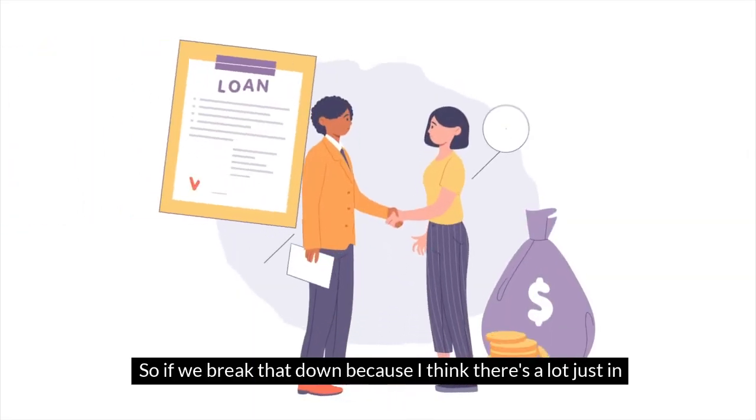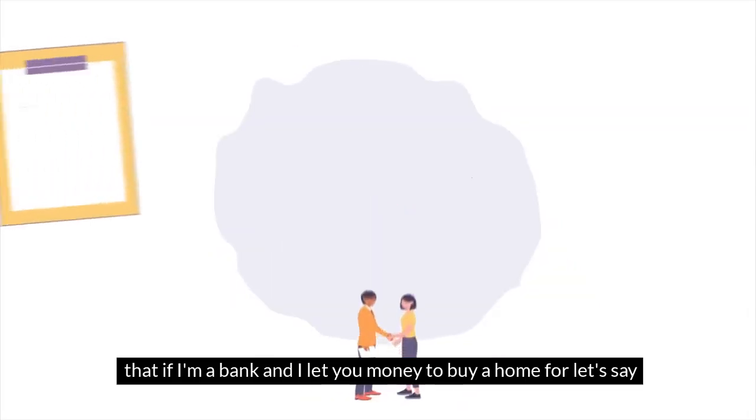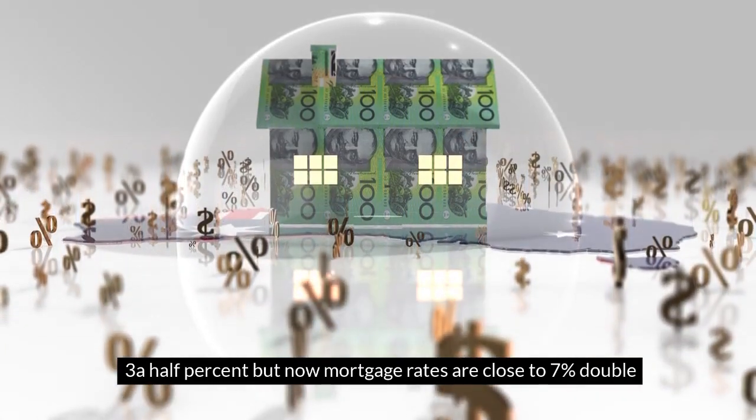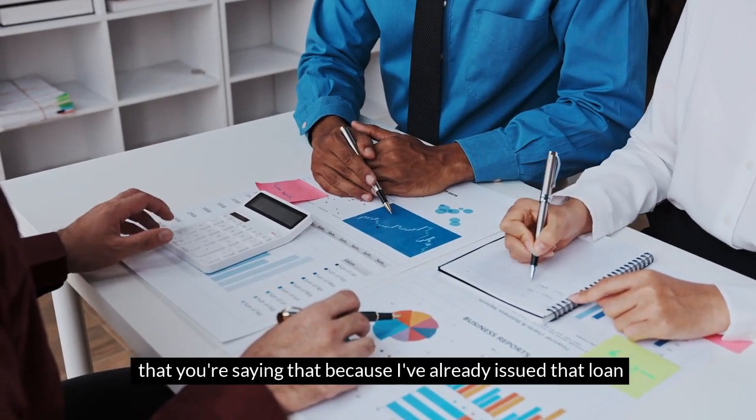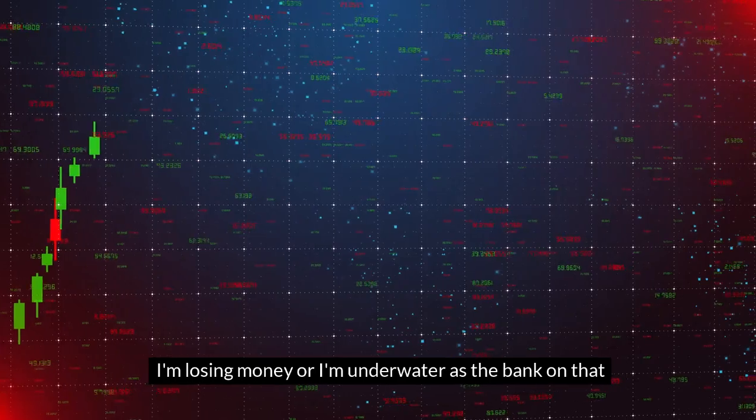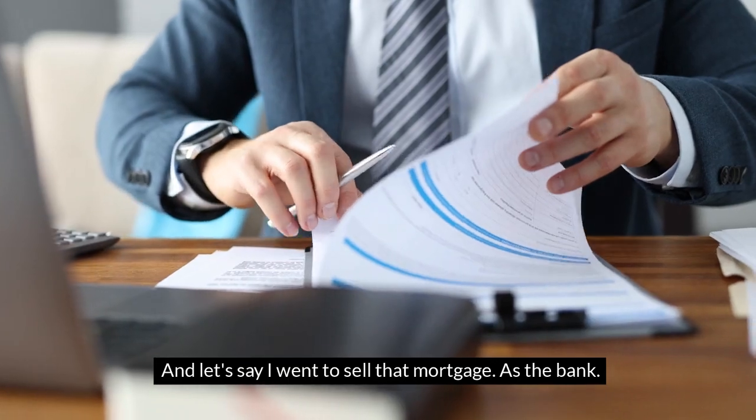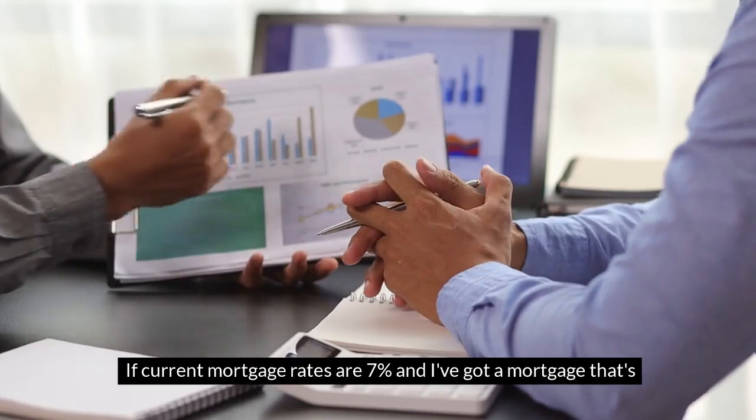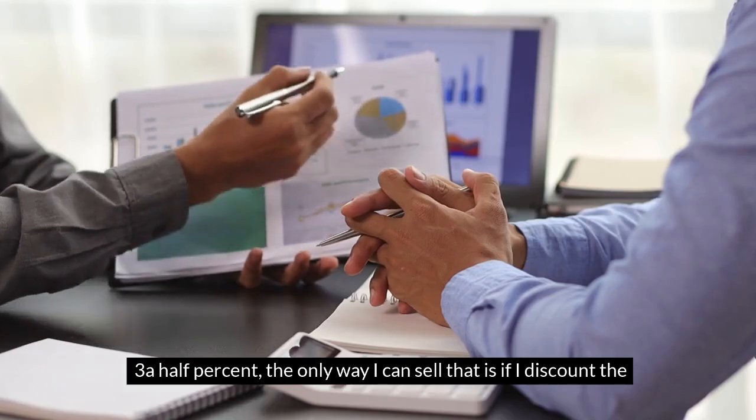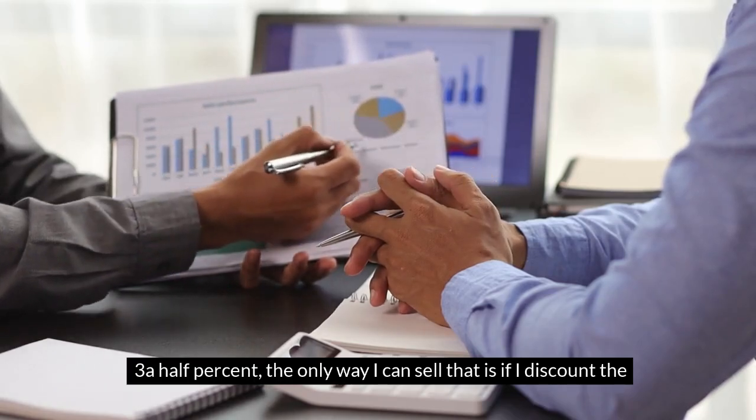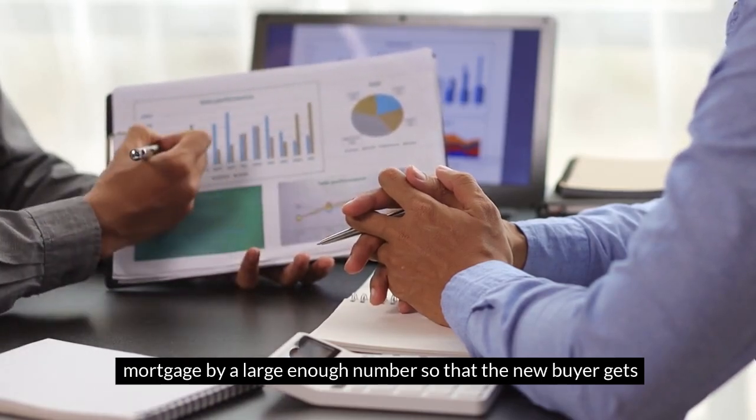If we break that down: if I'm a bank and I lent you money to buy a home for let's say three and a half percent, but now mortgage rates are close to seven percent—double that—you're saying that because I've already issued that loan, you're only paying me back three and a half percent. I'm losing money or I'm underwater as the bank on that mortgage because interest rates are higher today. If I went to sell that mortgage as the bank, if current mortgage rates are seven percent and I've got a mortgage that's three and a half percent, the only way I can sell that is if I discount the mortgage by a large enough number so that the new buyer gets a seven percent return on the money.